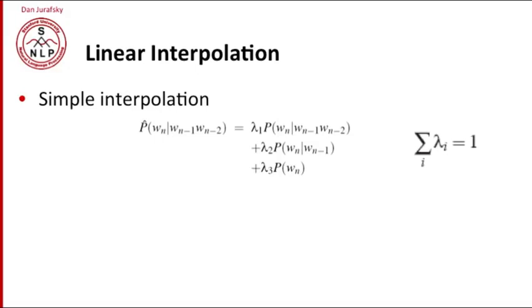There are two kinds of interpolation. Simple linear interpolation. We have our unigram, our bigram, and our trigram. And we simply add them together with three weights, lambda one, lambda two, and lambda three. The lambdas just sum to one to make this a probability. And we can compute our new probability, we'll call it P hat of a word given the previous two words by interpolating these three language models.